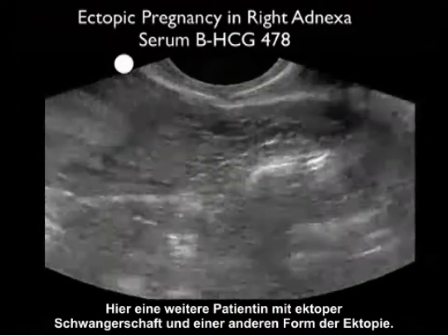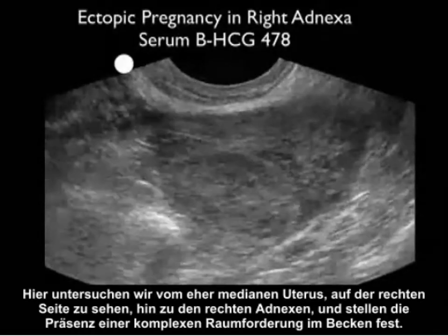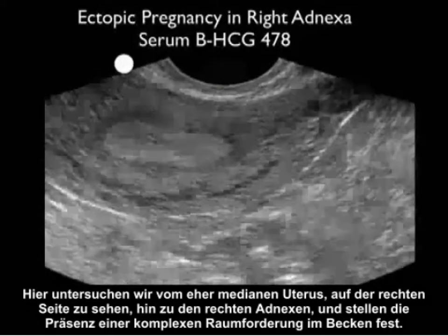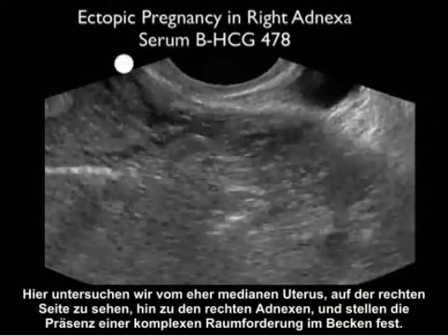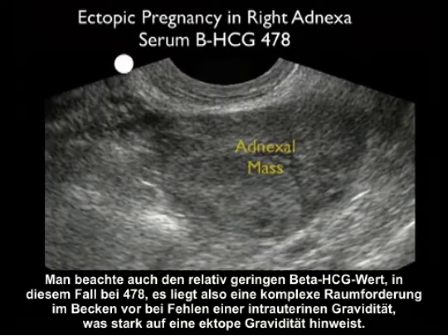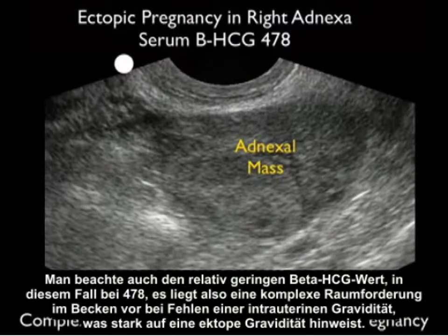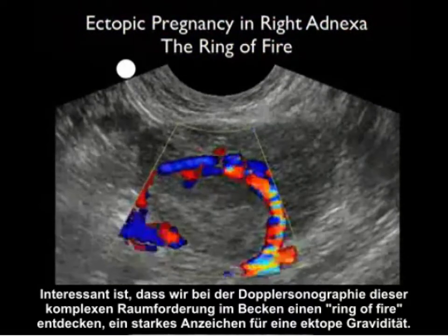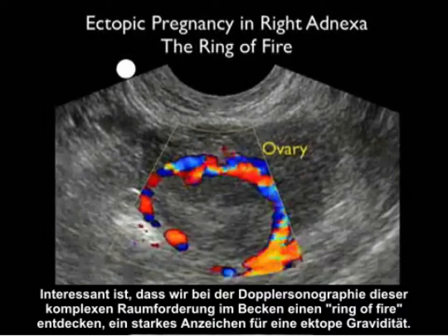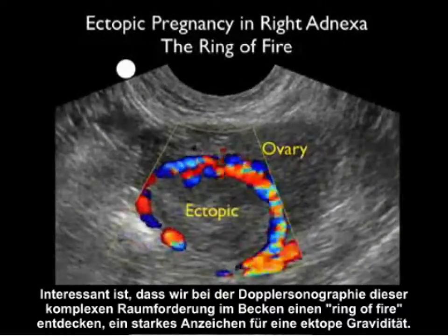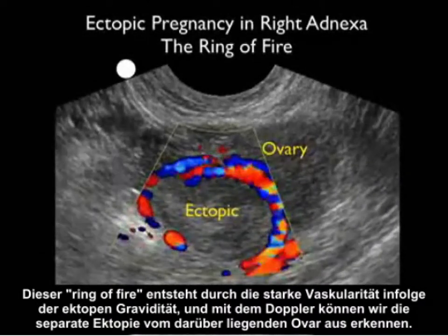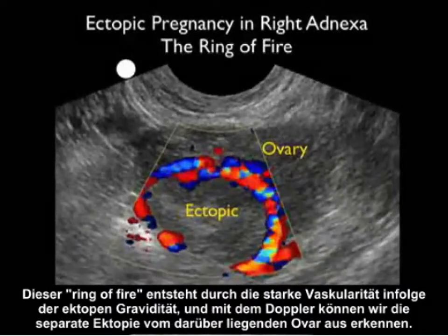Here's another patient with a different presentation of ectopic pregnancy. We're scanning from the midline uterus to the left, out to the right adnexa, where we notice the presence of a complex pelvic mass. Notice also the relatively low serum beta-HCG in this case at 478. A complex pelvic mass with absence of an intrauterine pregnancy is very suspicious for ectopic pregnancy. As we apply Doppler flow to that complex pelvic mass, we notice the ring of fire, very suggestive of ectopic pregnancy. The ectopic pulls a large amount of vascularity toward it, and using Doppler we can separate the ectopic from the ovary above it.